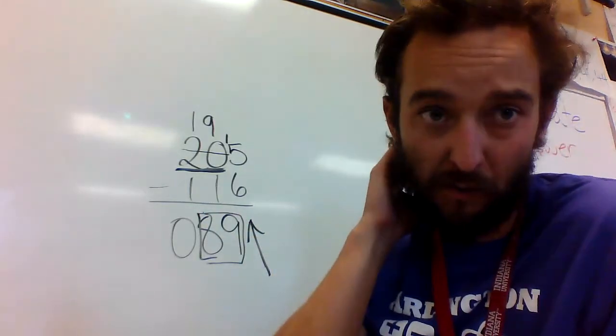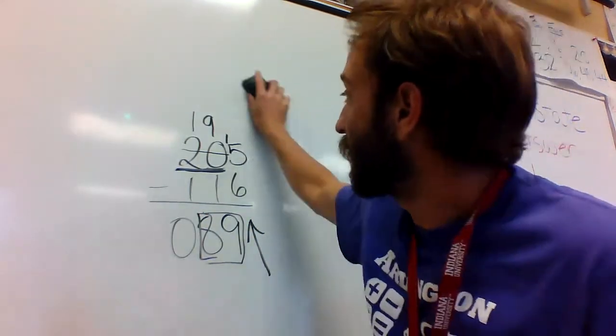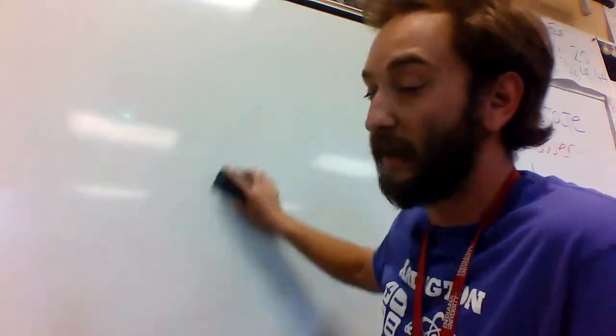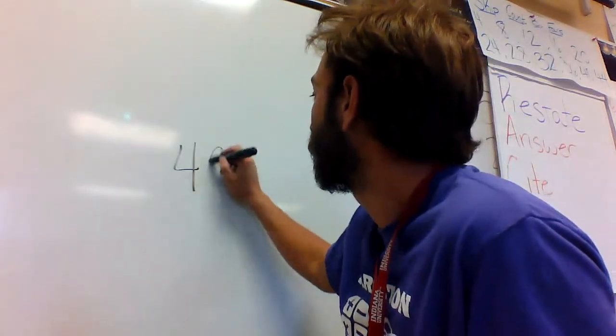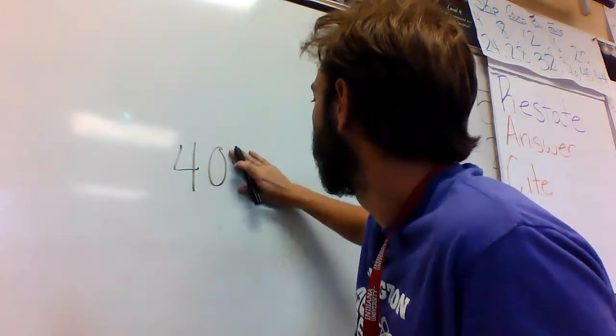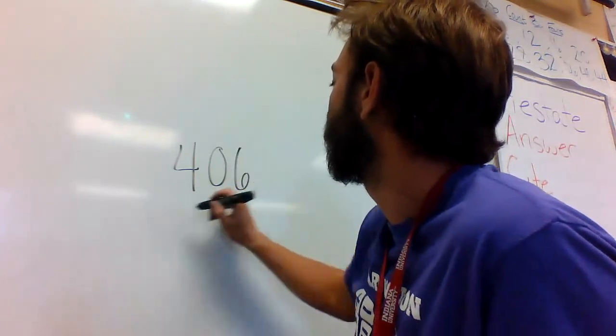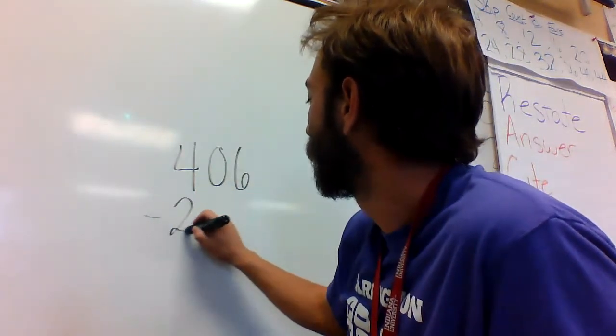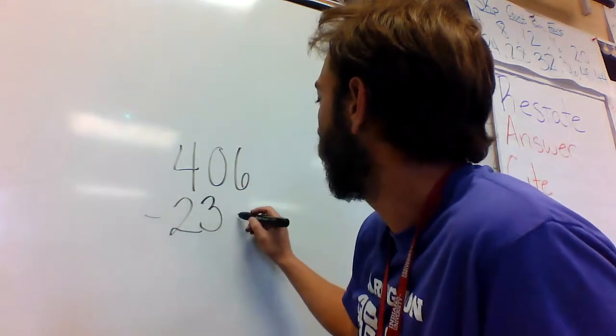Okay, so that's called borrowing across 0. Let's try another couple so you can get this down. Say I have 406 minus 238.